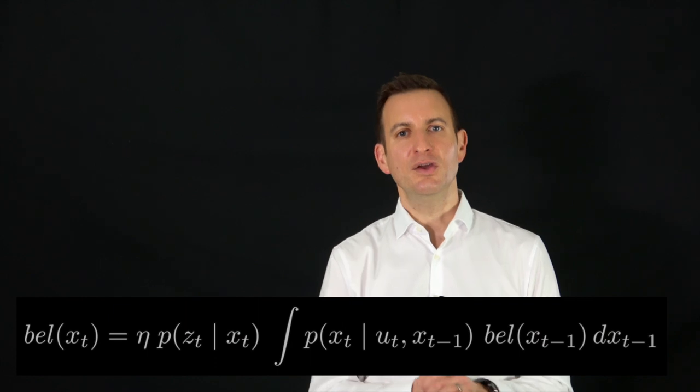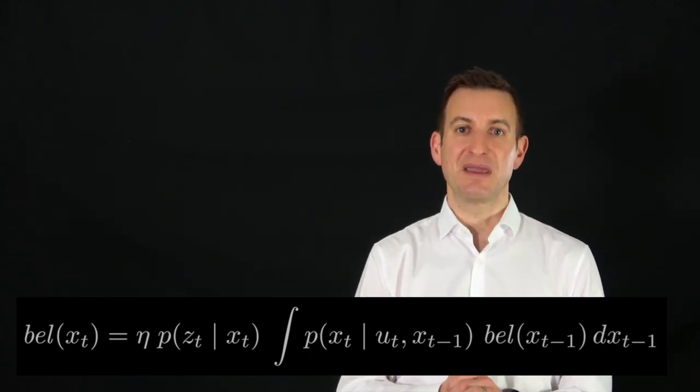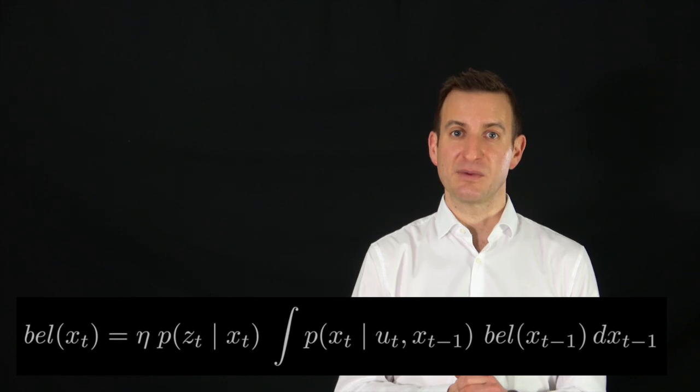If we derive the Bayes filter equation, then we can actually see this recursive pattern popping up. In order to perform this derivation, what you need is typically Bayes rule, performing a Markov assumption a few times, and the law of total probability. Then you can quite easily derive an equation describing how this recursive belief actually works.